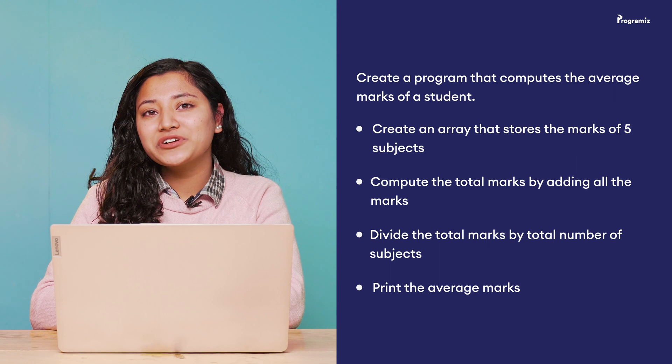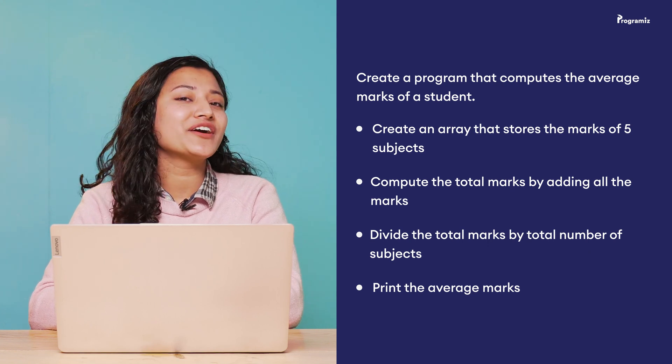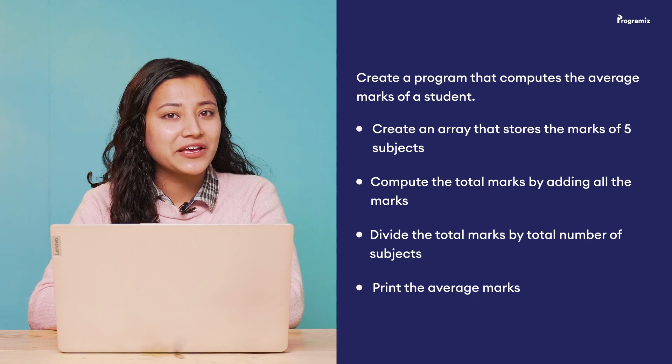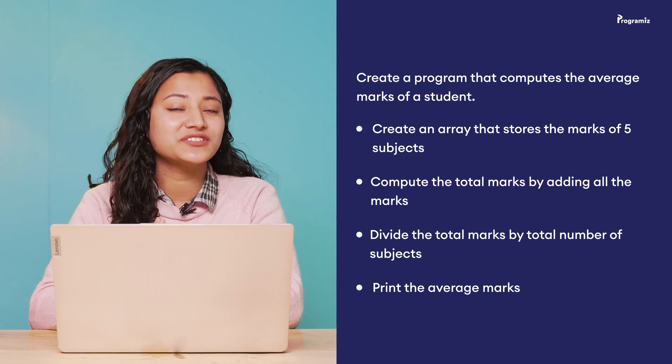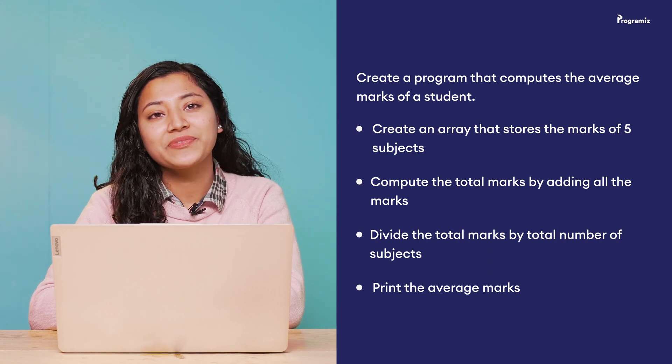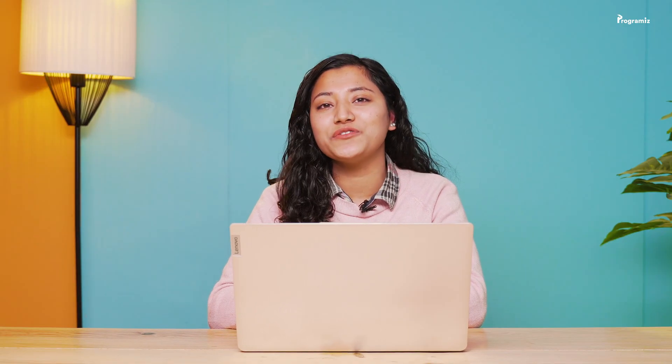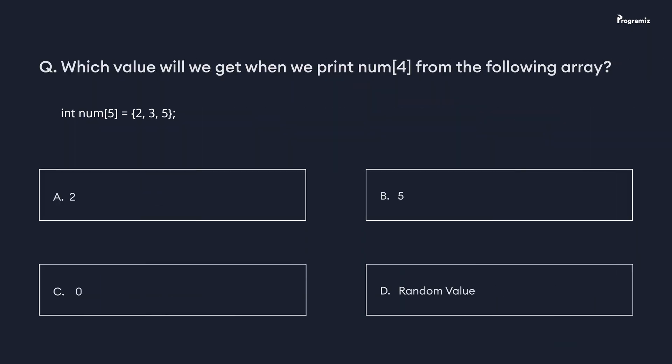To revise what we've learned, here is a programming task: create a program that computes the average marks of a student. Create an array that stores the marks of five subjects, compute the total marks by adding all the marks, divide the total by the number of subjects, and print the average. The answer is available in the GitHub repository linked in the description. For the programming quiz: which value will you get when you print num[4] from the given array? Comment your answer below. See you in the next video — happy programming!